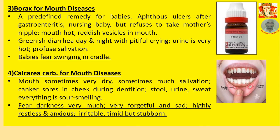Number 3: Borax for mouth diseases. A predefined remedy for babies. Aphthous ulcers after gastroenteritis. Nursing baby refuses to eat from mother's nipple. Mouth hot, reddish vesicles in mouth. Greenish watery diarrhea day and night, with pitiful mood and crying. Urine is bad and very hot. Profuse salivation. Babies fear swinging in a cradle — fear of swinging or downward motion is a characteristic of Borax.